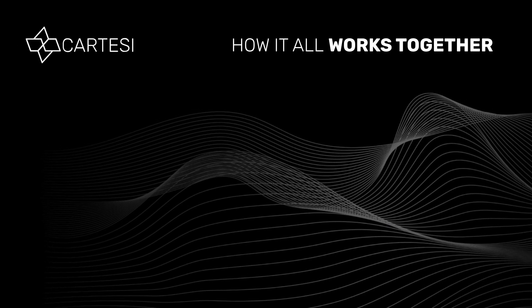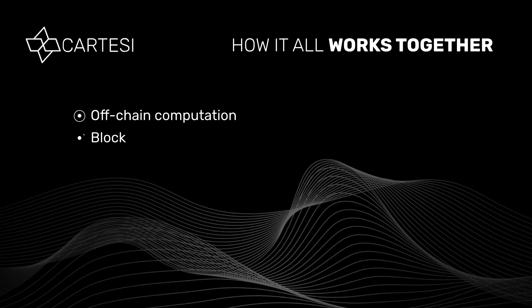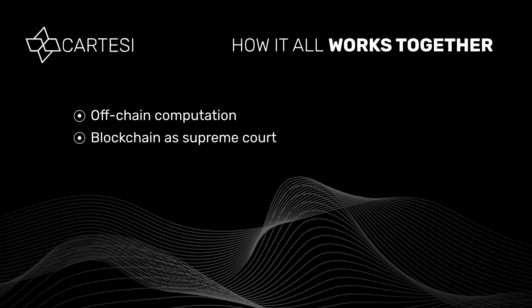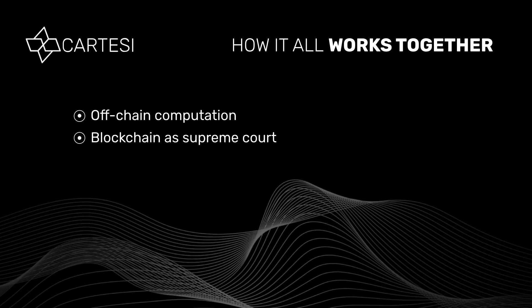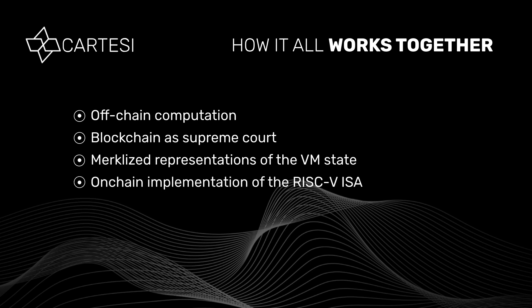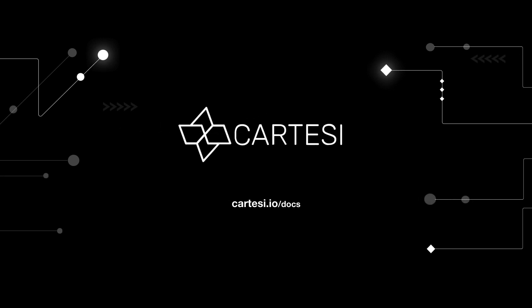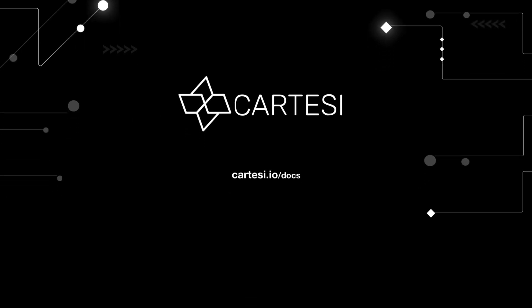Now you know that on Descartes, all dApp heavy processing is done off-chain. The blockchain is used as the supreme court in case of disputes over the result of the computation when the parties disagree. Disputes should only happen in rare circumstances, as the involved parties have strong economic incentives to behave honestly. Even in the rare cases when disputes arise, only a negligible part of the computation needs to be run by the blockchain. To understand Descartes in more detail and build your Linux-powered dApp, visit our SDK documentation portal. Happy coding!